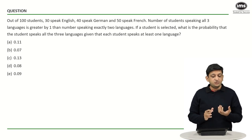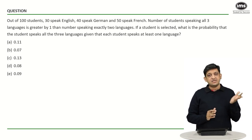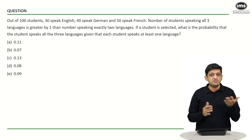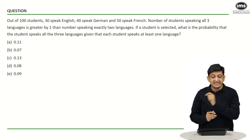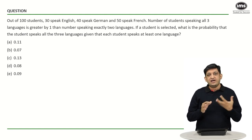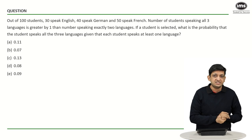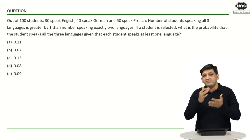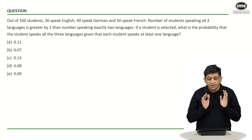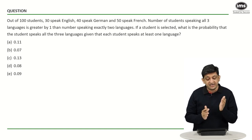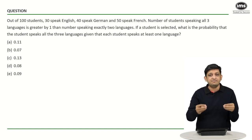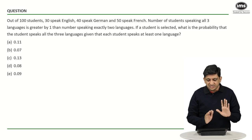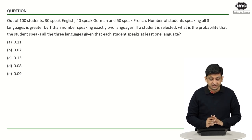In this question, we have students, some of whom speak English, some German, and some French. The important condition is that each student speaks at least one language. There is a key concept to understand here — the number of incidences versus the number of participants — which is very important for Venn diagram questions. I will explain it briefly before we start solving.